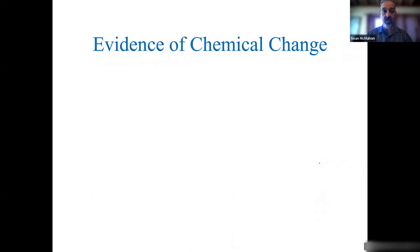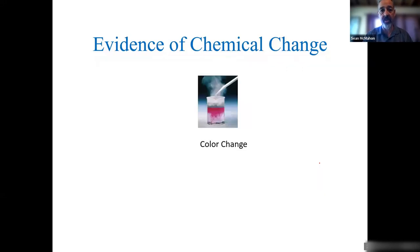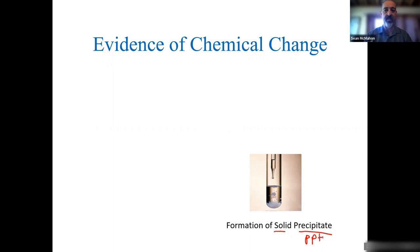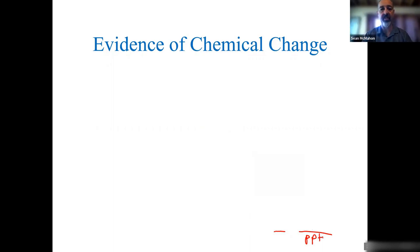So how do we know if there's been a chemical reaction, which essentially is a chemical change? There's a color change. There's the formation of a precipitate — precipitate is just a fancy way of saying solid, and I'll be writing PPT as shorthand. And there's formation of a gas.